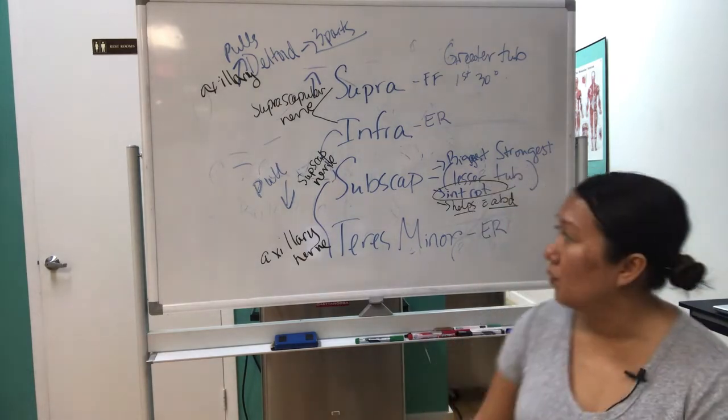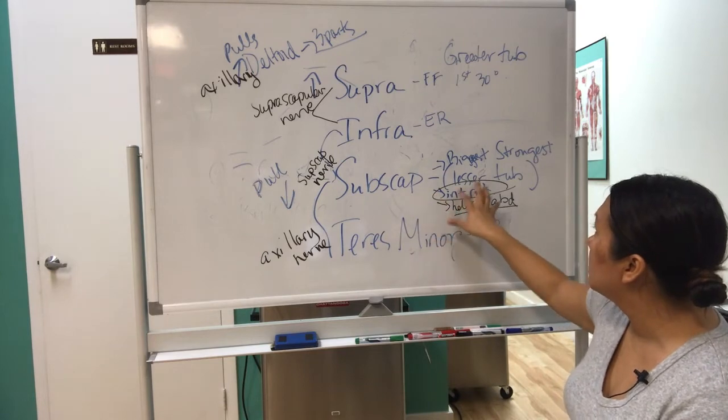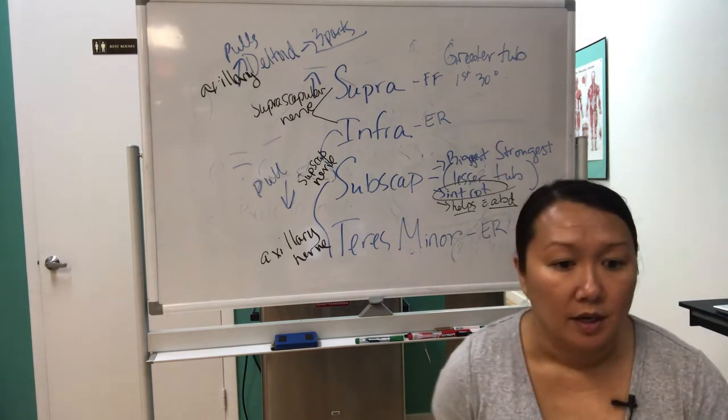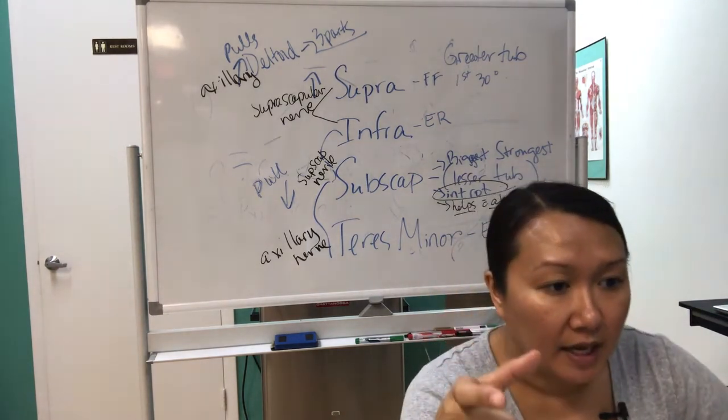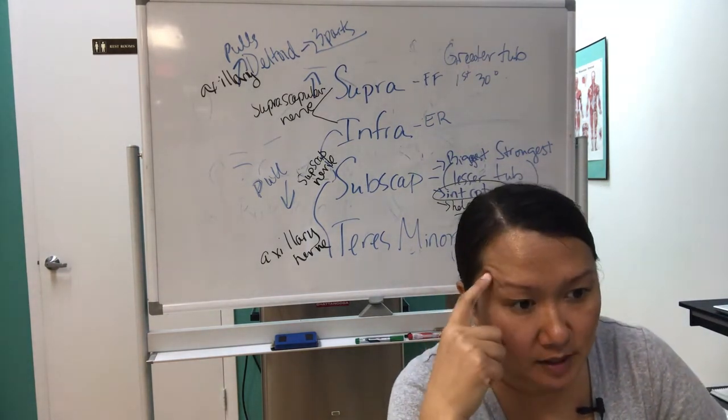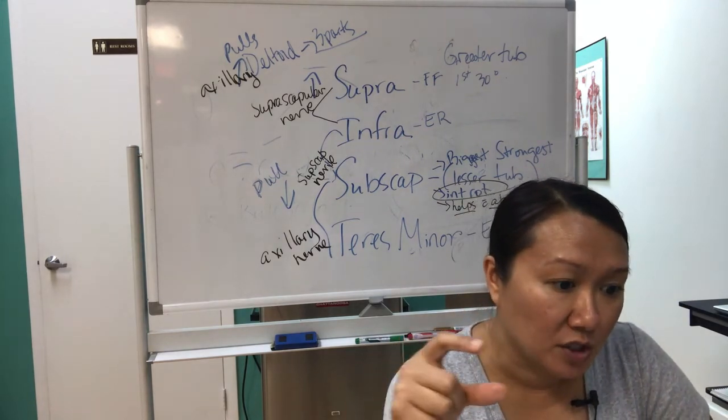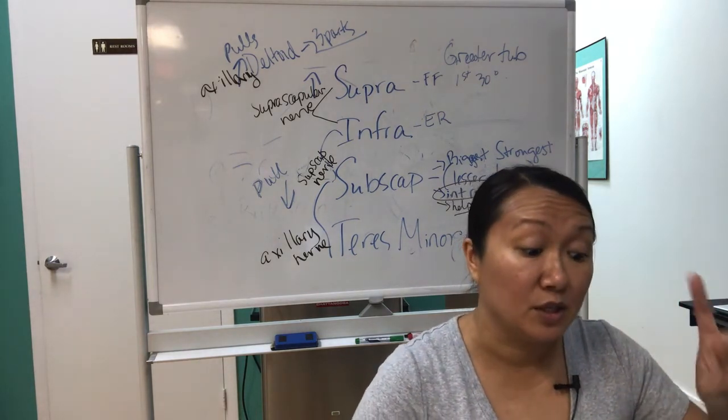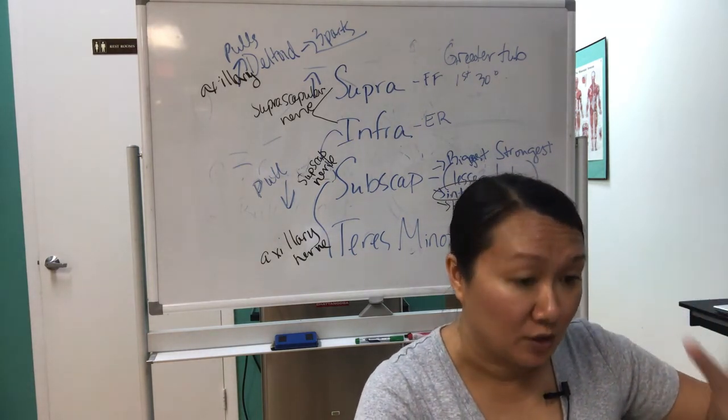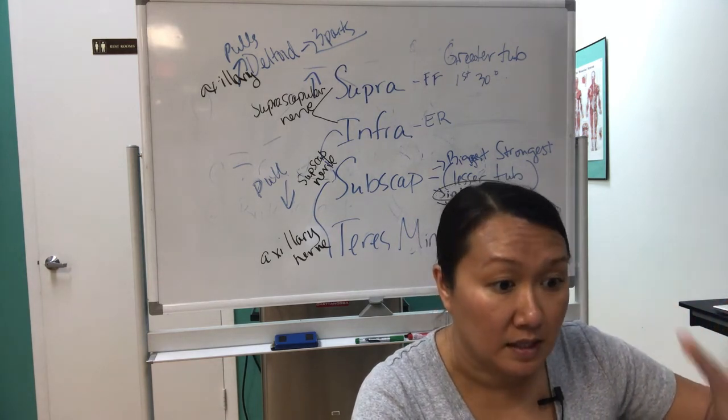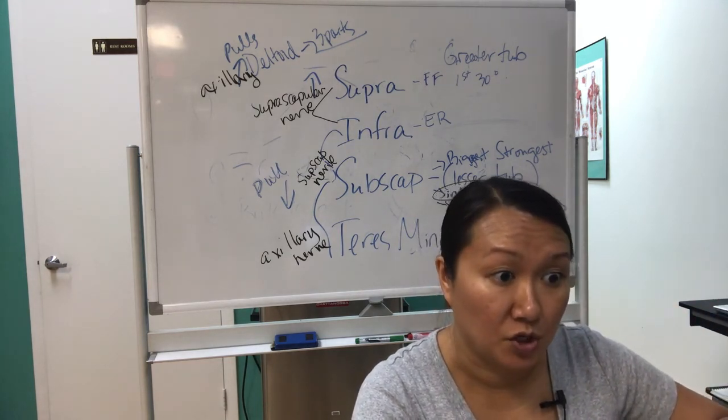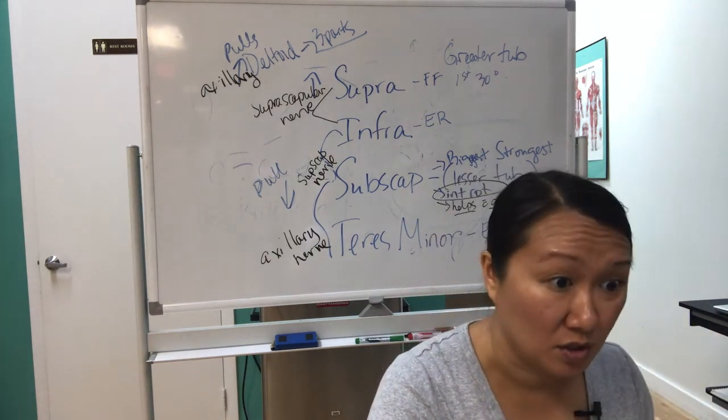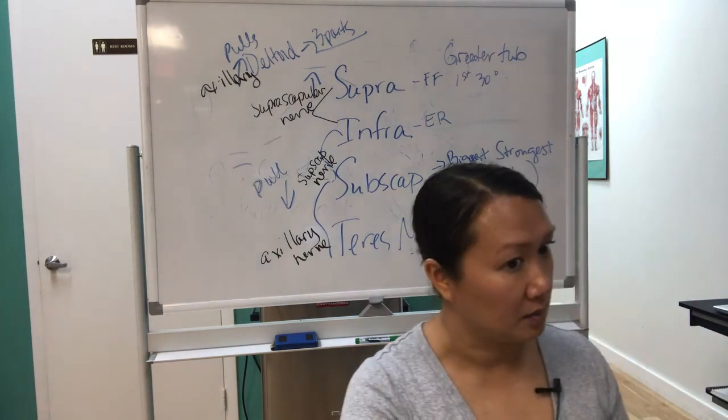So when you understand this muscle helps with external rotation, which test is going to test external rotation? So then when you read the test questions, it's going to come down to, well, that test is going to test for external rotation. I know these two muscles do external rotation. The infraspinatus and the teres minor do external rotation, whereas the subscap does internal rotation. So if that's one of the questions, and the question is all about external rotation, then subscap is out.